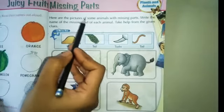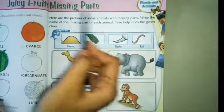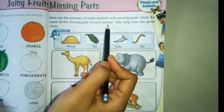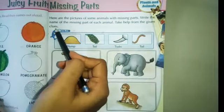Now read. Here are the pictures of some animals with missing parts. Write the names of the missing parts of each animal. Take help from the given clues.